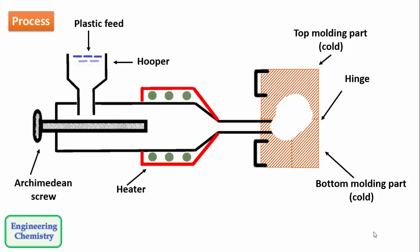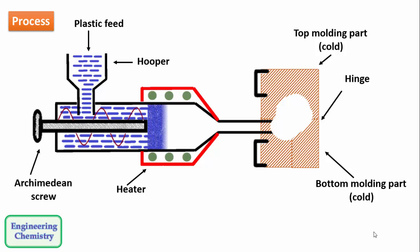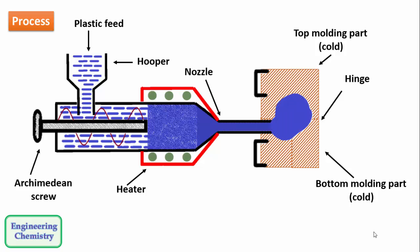The plastic ingredients are taken into a hopper and with the help of gravitational force it falls into the machine. When the Archimedean screw is rotated the material is pushed into the heated region where it melts. And at the nozzle the temperature increases to such an extent that it quickly enters into the mold cavity.